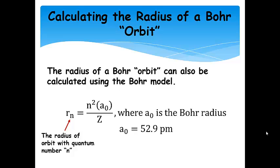Now, we can also calculate the radius of any Bohr orbit, okay? And N here is still just the principal quantum number of the orbit you want to calculate the radius for. A sub-naught is the Bohr radius. That's a special constant, and it's 52.9 picometers, and Z is just the atomic number as before.